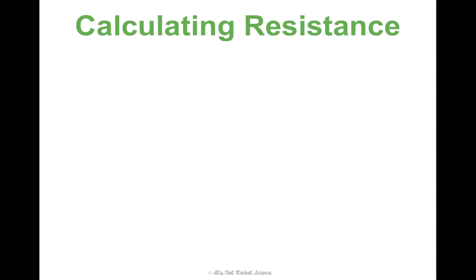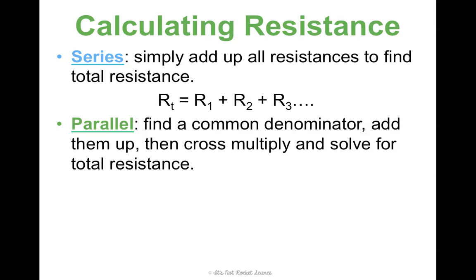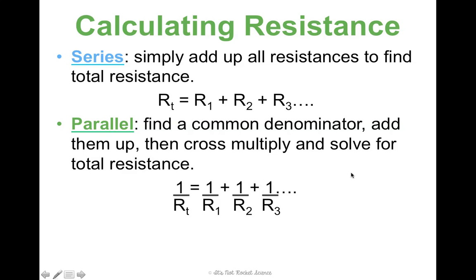In honors, we're going to learn how to calculate resistance, which is done differently for series versus parallel circuits. I'm not going to give you the equations for your assessments because it's a concept I want you to learn. For a series circuit, to find total resistance, you just add up all of the individual resistances: R_total = R1 + R2 + R3, etc. For a parallel circuit, it's a little bit trickier — you need to find a common denominator, add the fractions, cross multiply, and solve for total resistance. The equation is: 1/R_total = 1/R1 + 1/R2 + 1/R3, etc.